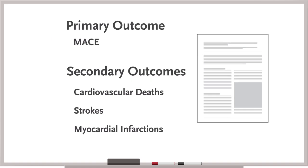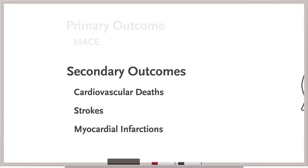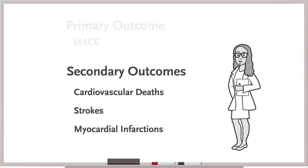Each component of the composite, MI, stroke, or cardiovascular death, would be secondary outcomes. Importantly, the trial is powered for the composite outcome, not the individual components. Nevertheless, investigators will be able to observe whether the direction of the effect is consistent for these secondary outcomes.